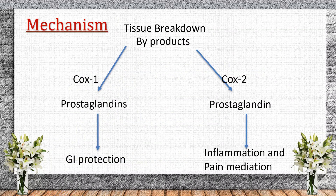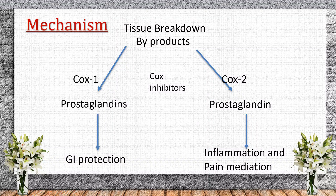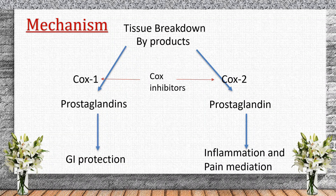NSAIDs work by inhibiting the cyclooxygenase enzymes, which are responsible for prostaglandin synthesis. Prostaglandins play a crucial role in pain, inflammation, and fever. COX-1 is involved in gastric protection, kidney function, and blood clotting. COX-2 is induced during inflammation, pain, and fever. By blocking COX enzymes, NSAIDs reduce pain, inflammation, and fever.